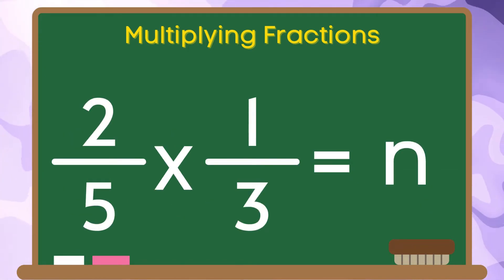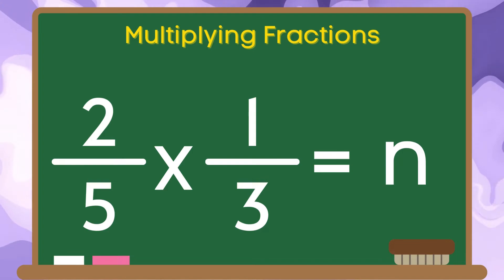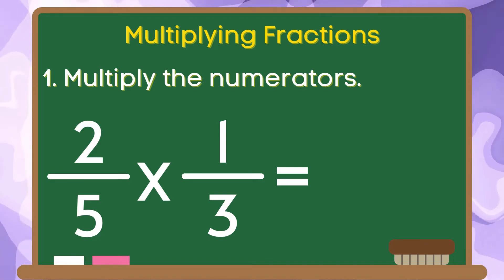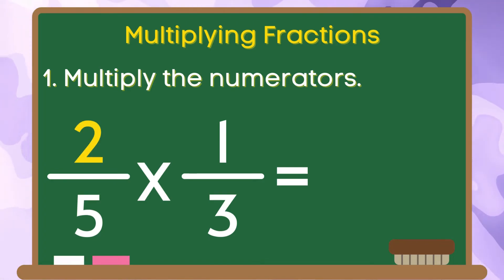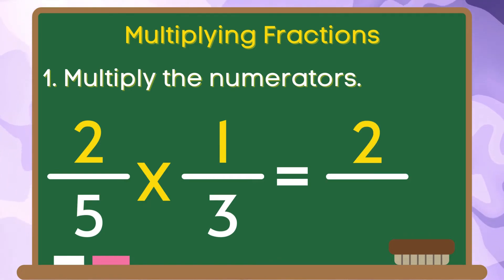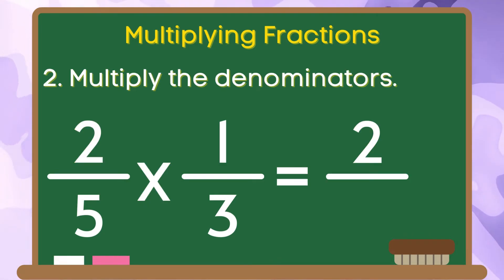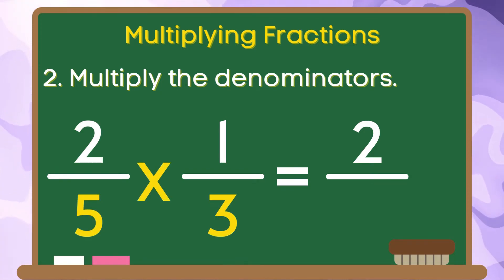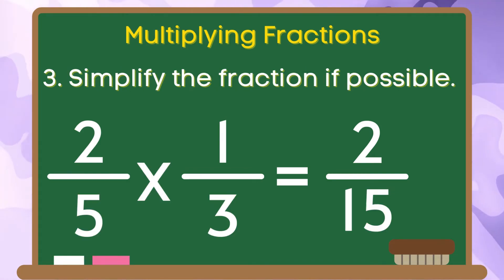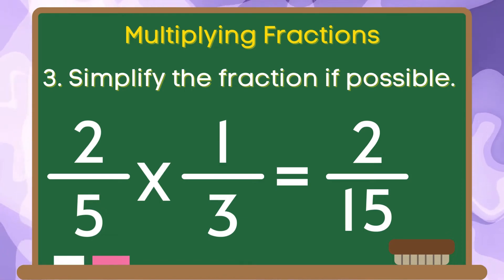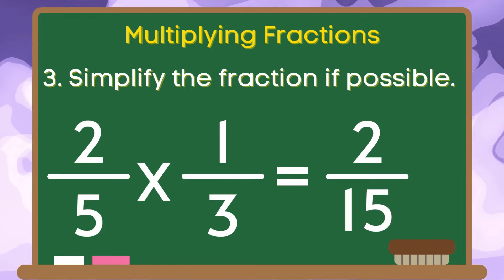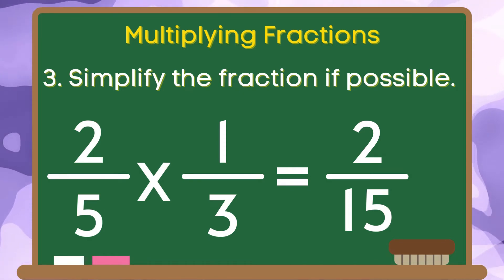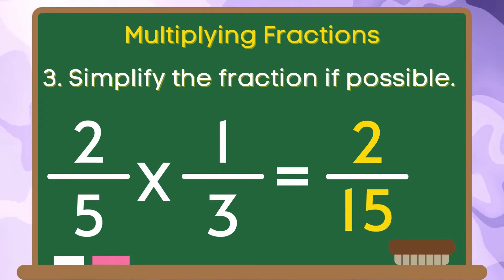And for the last example, let us get the product of 2 fifths and 1 third. Let us do step 1, multiply the numerators. 2 times 1 is equal to 2. For step 2, let us multiply the denominators. 5 times 3 is equal to 15. For the last step, let us simplify the fraction if possible. Since 2 and 15 do not have common factors aside from 1, the simplified product of 2 fifths and 1 third is 2 over 15.